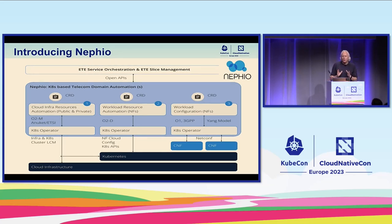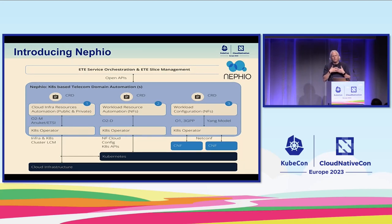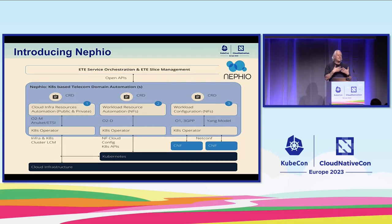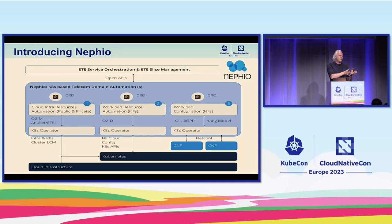At the moment in Nephio we are focused mainly on the first two pillars, and also the interdependencies between them. If a network function has requirements on the infra, we want to handle that at scale and in a way that respects organizational boundaries.